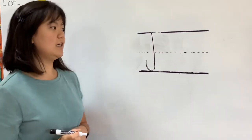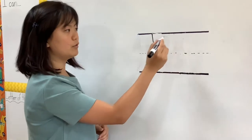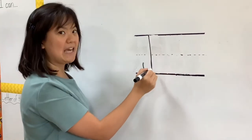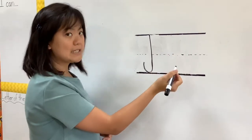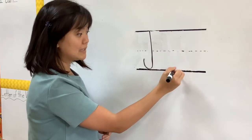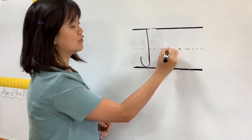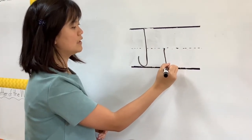For lowercase j, instead of starting from the top, we start in the middle and it is the same thing, but just like the G, it goes past the bottom line. So we start from the middle and it goes down. Don't stop there.